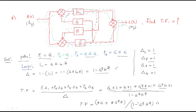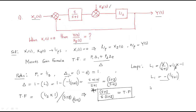For any block diagram problem, use Mason's gain formula: identify the number of forward paths, then identify the loops, find the Δ value, find Δ1, Δ2, Δ3, Δ4, and substitute all values into the transfer function equation. Any block diagram can be converted into its transfer function this way. I hope all of you understood this session. Thank you.